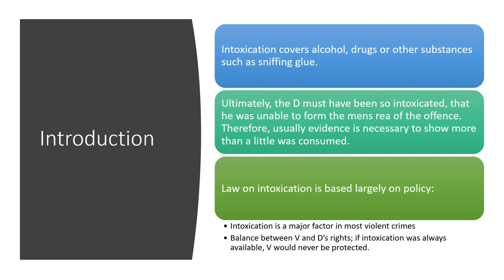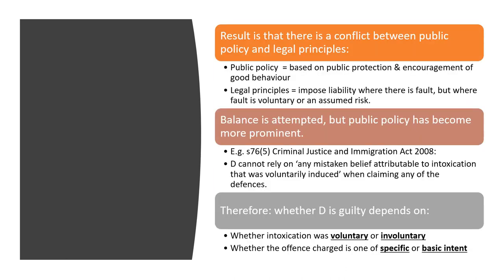The law on intoxication is largely based on policy, because intoxication is a factor in most violent crimes. There has to be a balance between the victim's and the defendant's rights. If intoxication were always available, the victim would never be protected in law. There is a conflict between public policy — based on public protection and encouragement of good behaviour — and legal principles, which impose liability with fault, or where fault is voluntary or there is an assumed risk.